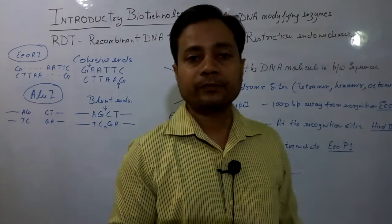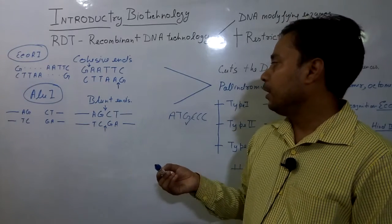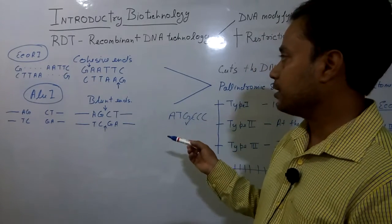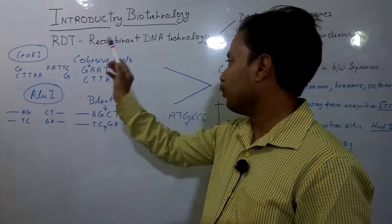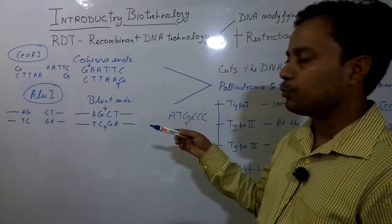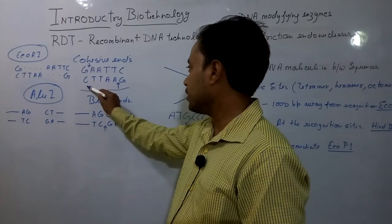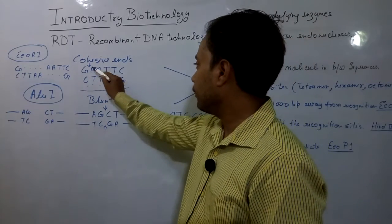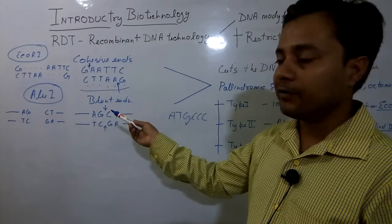The next classification is based on the kind of ends produced after digestion of DNA molecules. These restriction endonucleases recognize palindromic sites, which are mirror-image sequences — for example, GAATTC in the case of EcoRI. Cohesive end restriction endonucleases produce cohesive or staggered ends upon digestion. The recognition site is a hexamer — 6 bases — and the enzyme cuts at staggered positions on opposite strands, producing single-stranded overhangs after digestion.